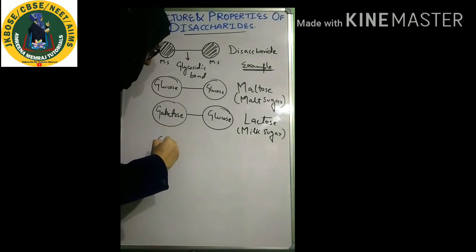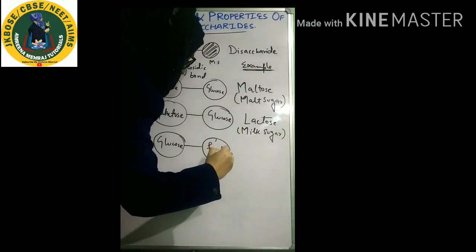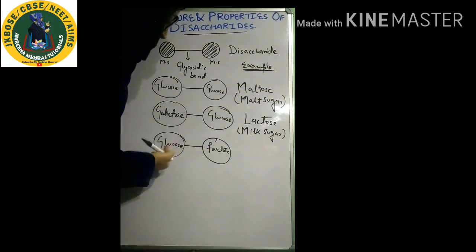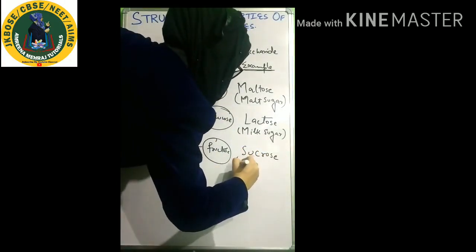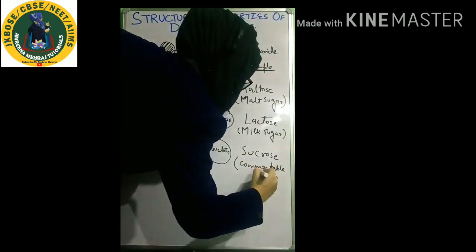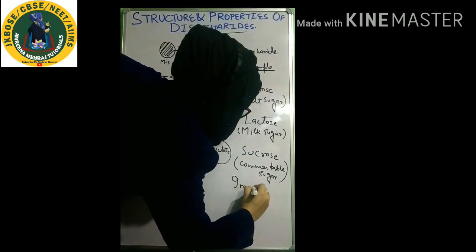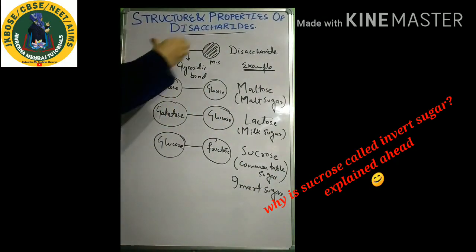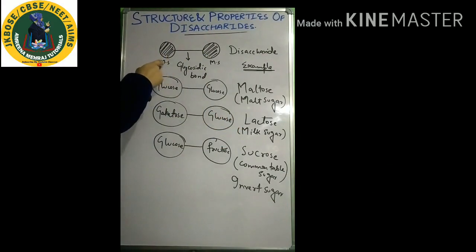Another example: if I take glucose and join it to another sugar which is fructose, again a disaccharide made up of glucose and fructose held together with the help of a glycosidic bond. This disaccharide is sucrose, which is your common table sugar. The alternative name for sucrose is also invert sugar. Now these are some representative examples of disaccharides.